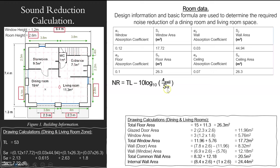The Sabine formula is the complicated thing because the area of the wall is quite easy to work out. For the Sabine formula, you have to find for each specific material the absorption coefficient. So our window absorption coefficient is 0.12 and our window area is 17.72 — we multiply them together. That's the Sabine, that's the absorption for the window. Then we have to do that for the wall, the floor, and the ceiling because they're all different materials.